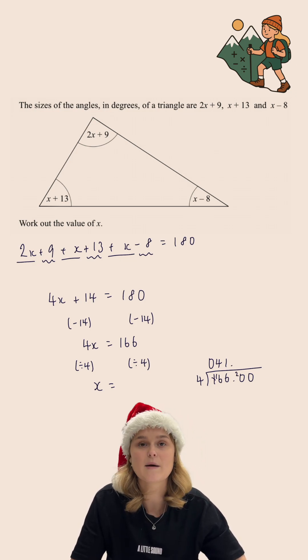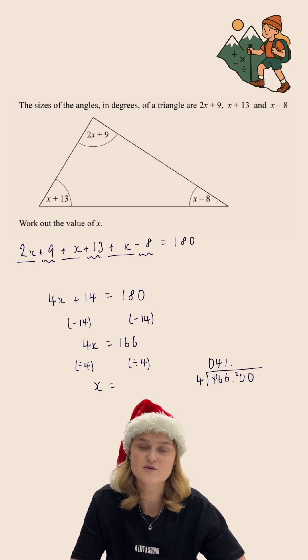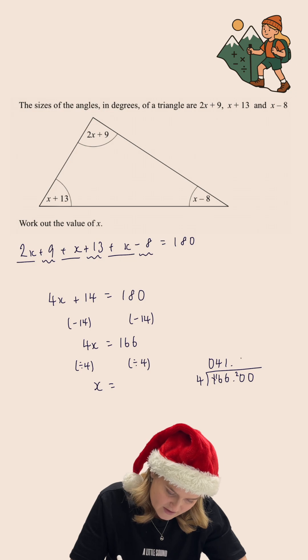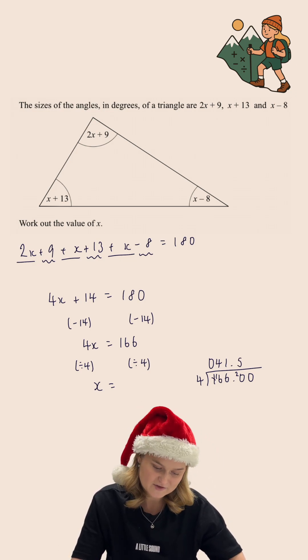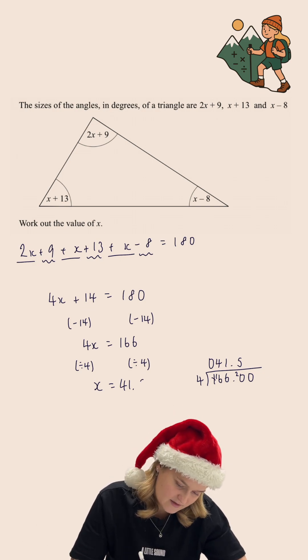The decimal point can go straight up above the bus stop. I'm now doing how many whole groups of 4 go into 20. Well 4 goes into 20 5 times with no remainder. And so I know that x is equal to 41.5.